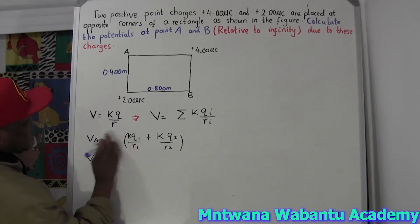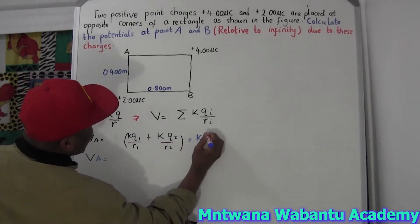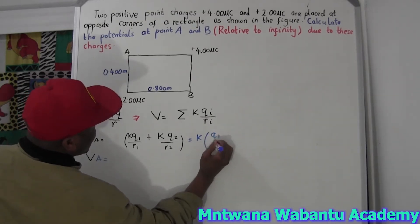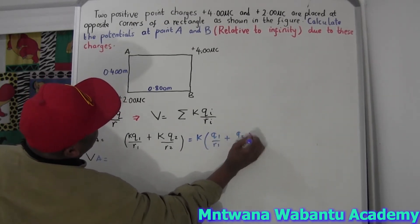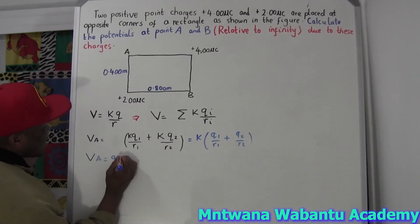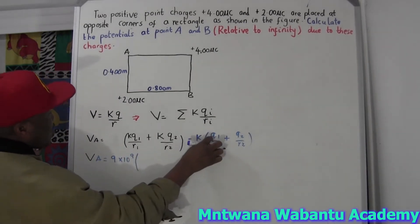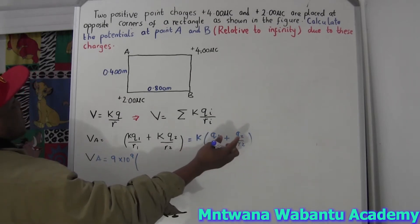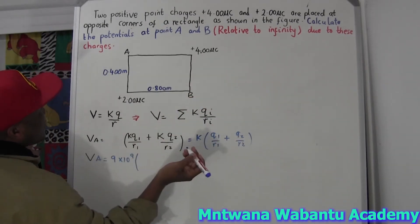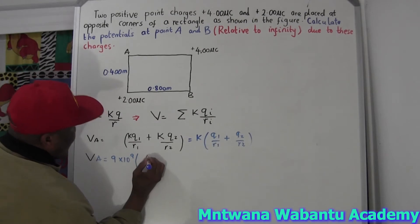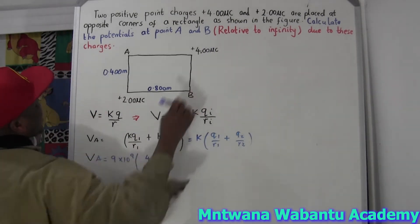K is constant, so we take it out. K equals 9 times 10 to the power 9. Then Q1 — let's say charge 1 equals 4 — but we have to convert this to coulombs. So we multiply by the appropriate power of 10.